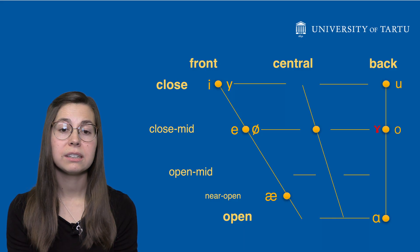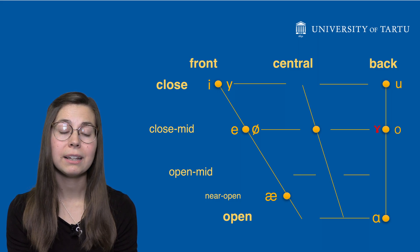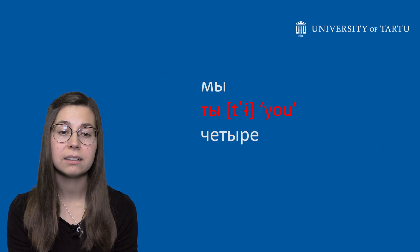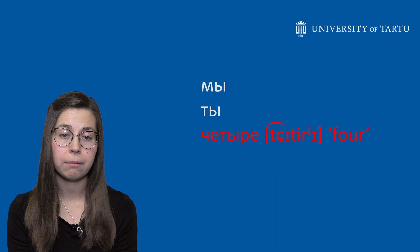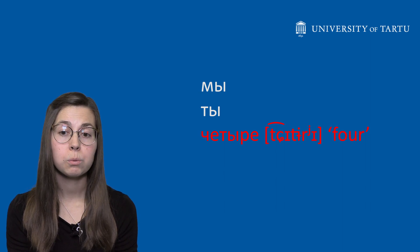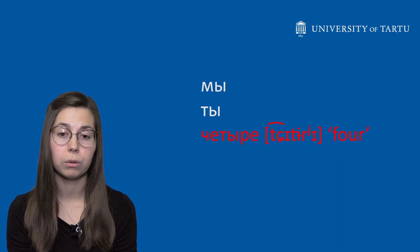The vowel õ is not very common in world languages. A roughly similar but not precisely the same vowel exists, for example, in Russian. Note that this similar Russian vowel is pronounced with a higher tongue position than the Estonian vowel.